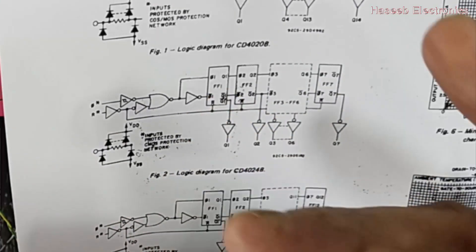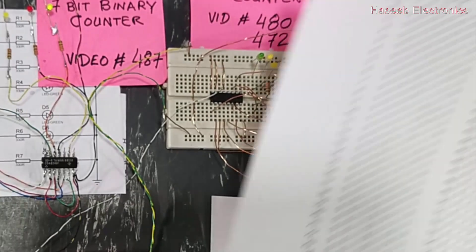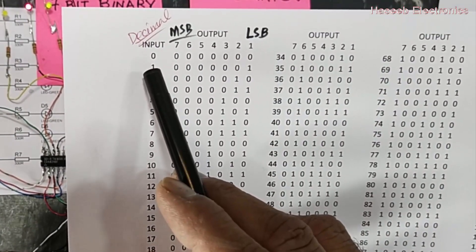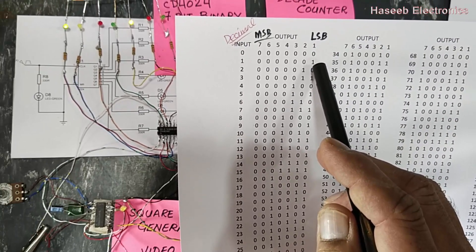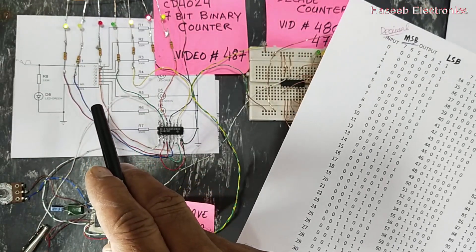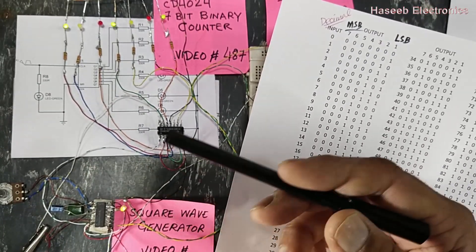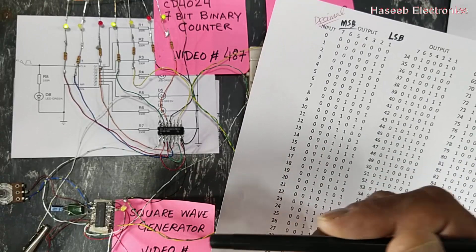In the truth table we see at pin number one, LED number one will turn on, the output will go high. Actually these LEDs are for demonstration. Basically it is widely used in electronic circuits to divide frequency and to count time.